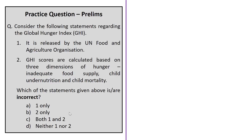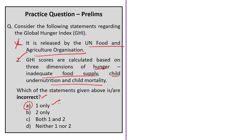Practice question two on the Global Hunger Index: Statement 1 says the GHI is released by the UN Food and Agriculture Organization — this is incorrect. It is released by Concern Worldwide and Welthungerhilfe. Statement 2 says GHI scores are based on three dimensions — inadequate food supply, child undernutrition, and child mortality — this is correct. The answer asking for the incorrect statement is option A: one only. Note that a high score (near 100) indicates extremely alarming hunger.